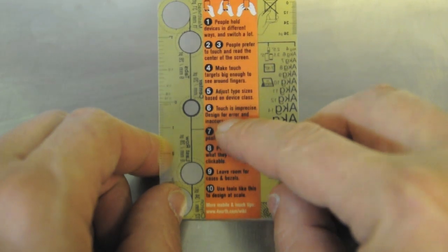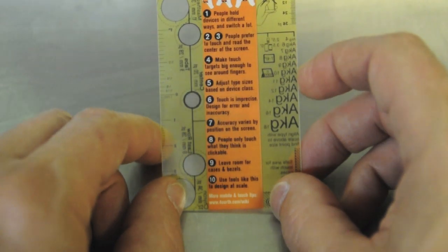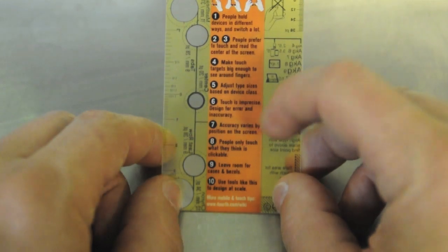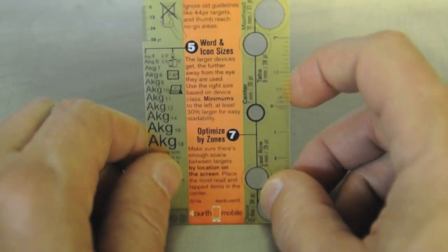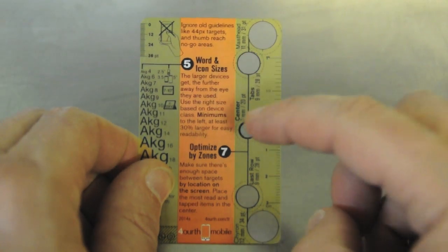Reminds you that touch is imprecise. You need to design for error and accuracy. That accuracy varies by position on the screen, which is what the main point of the template really is. These touch accuracy zone charts.